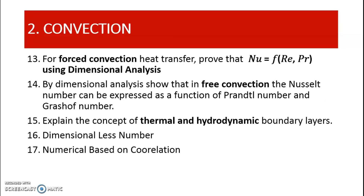From convection I have selected five most important questions for the GTU examinations. The first two questions involve using dimensional analysis to derive the co-relationship between dimensionless numbers — Nusselt number, Reynolds number, Prandtl number, and Grashof number — for forced convection and free convection. The next question is the discussion of thermal and hydrodynamic boundary layers, and the most important question is the definition of various dimensionless numbers along with their physical significance. You also need to prepare numericals based on these correlations for both forced and free convection.